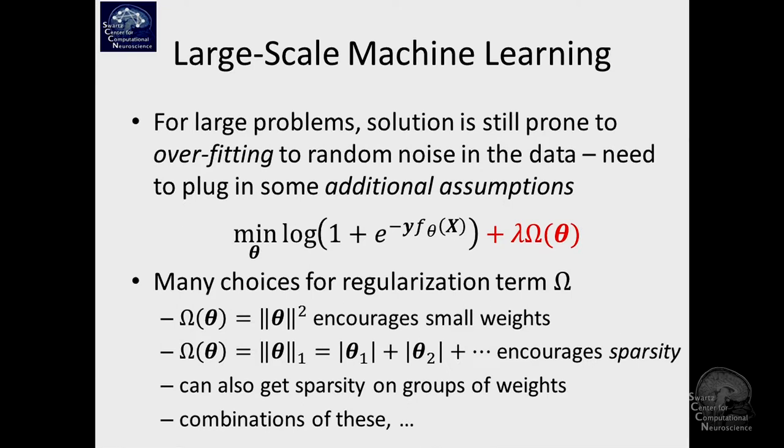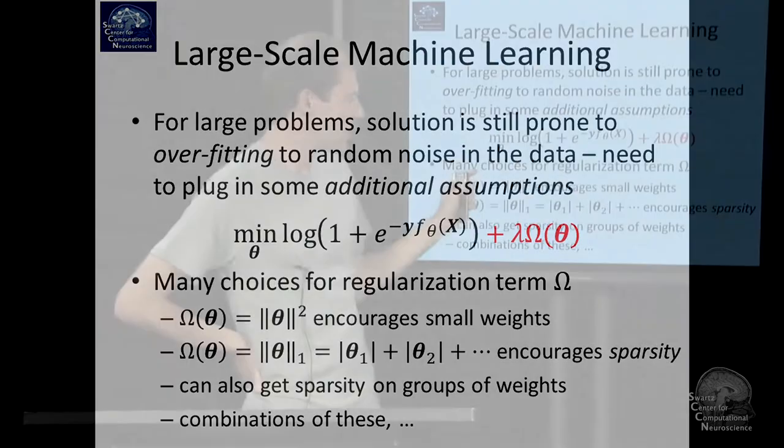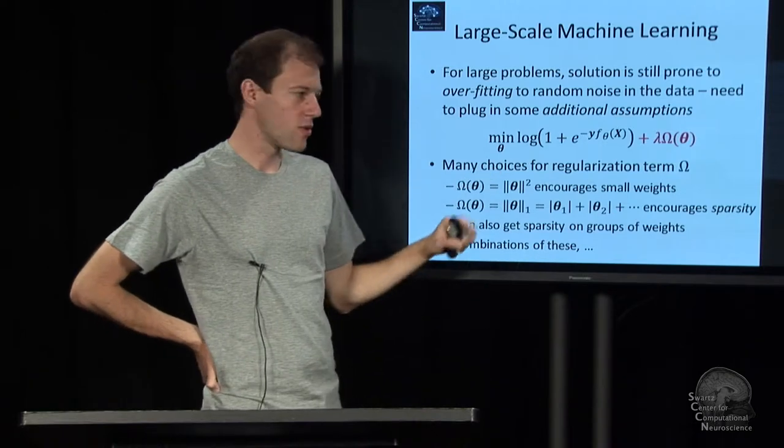And there is a few that give rise to convex terms here. If this is convex and that's convex, the whole sum is still convex. And so it's still easily solvable with local optimization. That's why we're usually looking at certain kinds of forms.